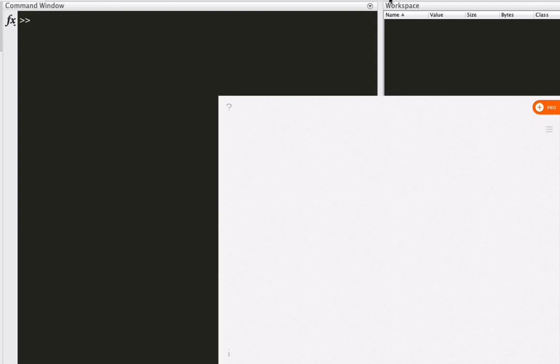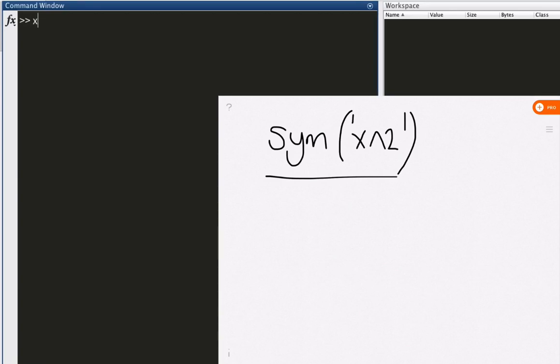The way we can solve equations is just like this. We can use this function called sym. It's the abbreviation of symbolic and we open parentheses and we enter whatever we want inside single code. For example we can say x squared just like this. So let me show you on MATLAB. So let's say x is equal to symbolic x. This is how we define it.